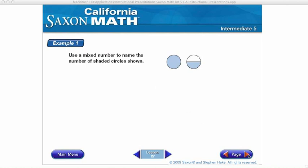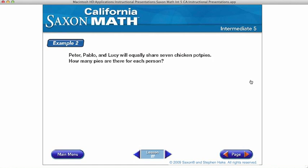Peter, Pablo, and Lucy will equally share seven chicken pies. How many pies are there for each person? So first I want to draw a picture. So I have Peter, I have Pablo, I have Lucy, and I have seven pies.